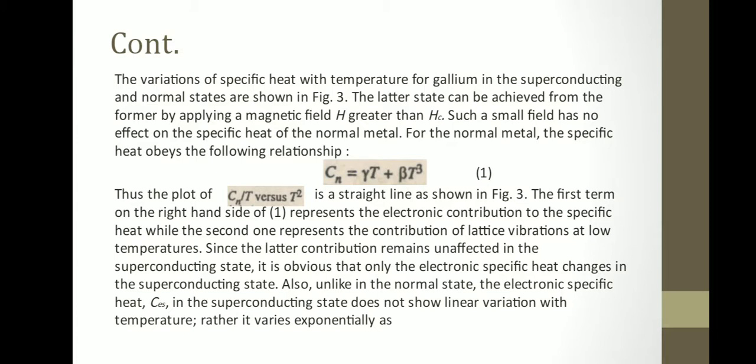Thus the plot of CN/T versus T squared on the next slide is a straight line as shown in Figure 3. The first term on the right side of equation 1 represents the electronic contribution to the specific heat, while the second one represents the contribution of lattice vibrations at low temperatures.